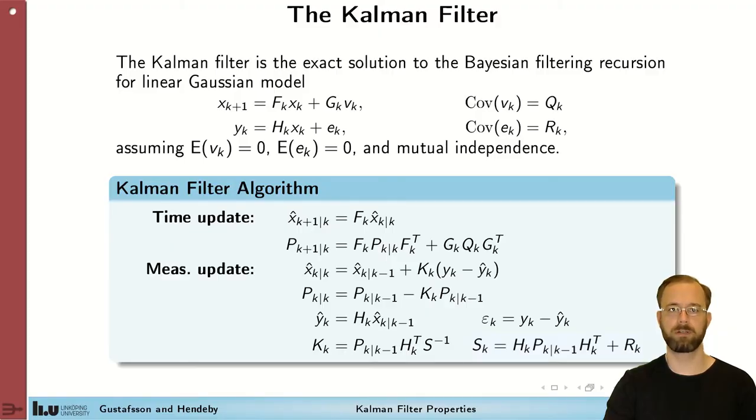Let's start by recalling the Kalman filter. The Kalman filter works on linear models where the next state is a linear combination of the previous one plus some process noise and the measurement is linear combination of the state plus some measurement noise. We assume that both the process noise and the measurement noise have zero mean and known covariance matrices.